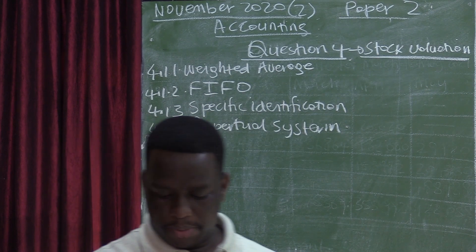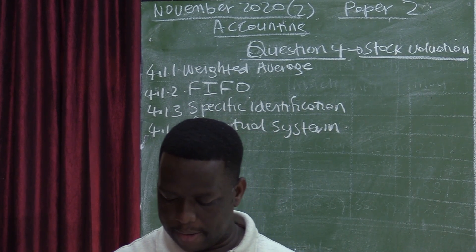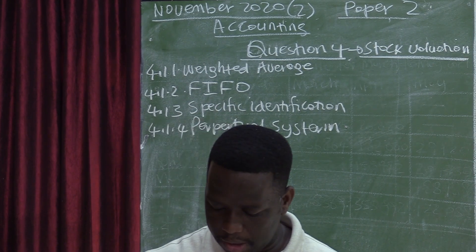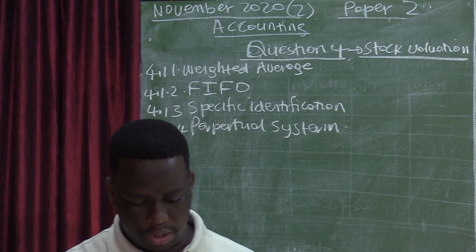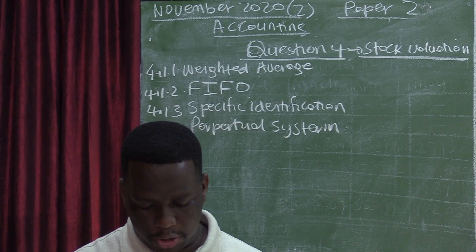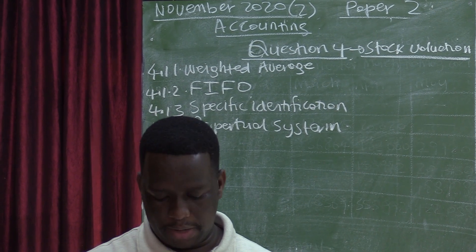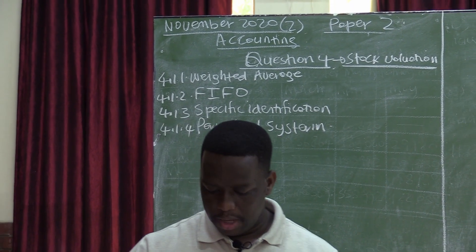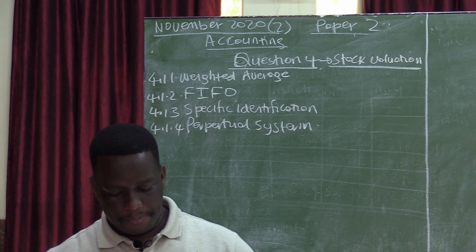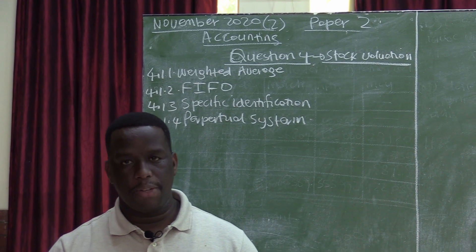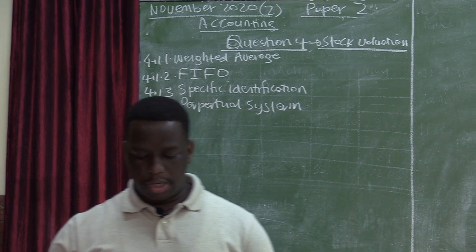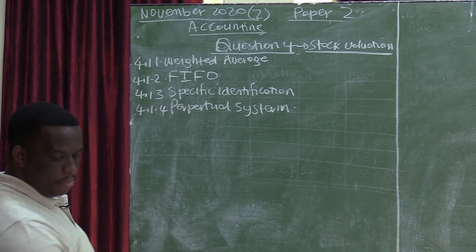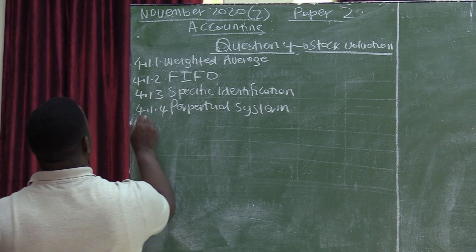Please make sure you go through this and are very clear about the differences of these stock valuation methods and the stock control systems. To recap: the method suitable for inexpensive goods is weighted average; closing stock balance recorded at most recent prices is FIFO; individual stock items valued at cost price on the purchase invoice is specific identification; and cost of sales recorded for every sales transaction is the perpetual stock system. Now it's 4.2.